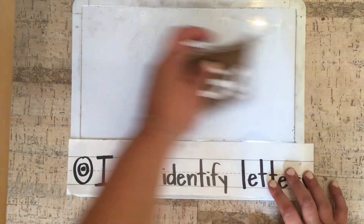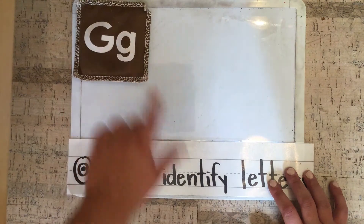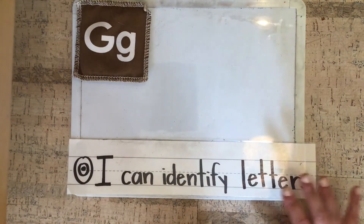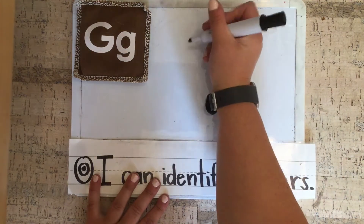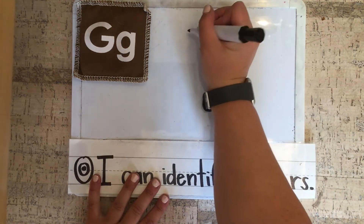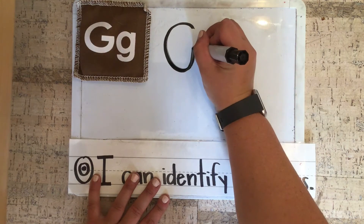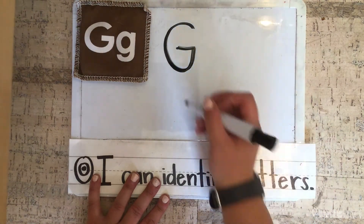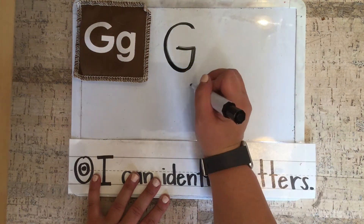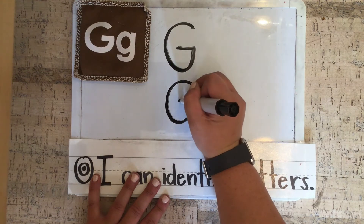Alright, now we're going to practice writing the letter G. I'm going to put my beanbag here so I remember what the letter G looks like. For the uppercase letter G, I'm going to make a big C curve and slide left. Let's do that again: big C curve, slide left.